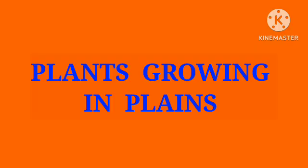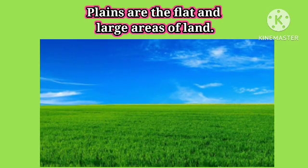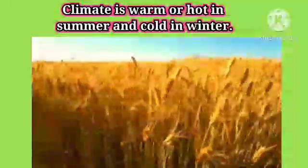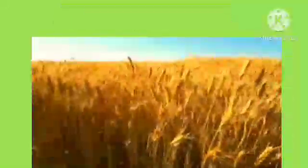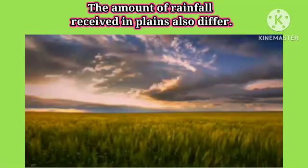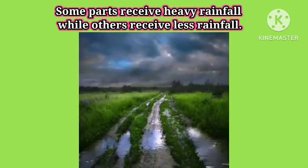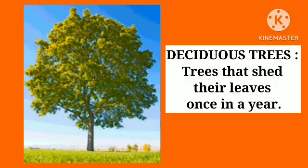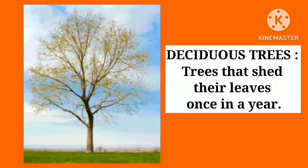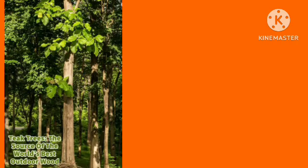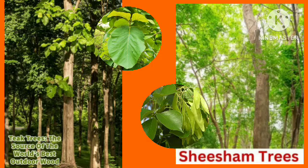Plains are the flat and large areas of land. In plains, the climate is warm or hot in summer and cold in winter. The amount of rainfall received in plains also differs. Trees growing in plains with less rainfall shed their leaves in autumn and bear new leaves in spring. These trees are called deciduous trees. Shisham and teak are some deciduous trees.